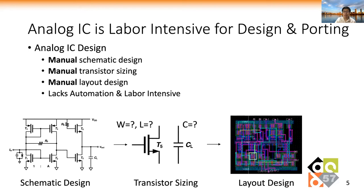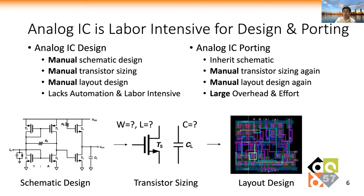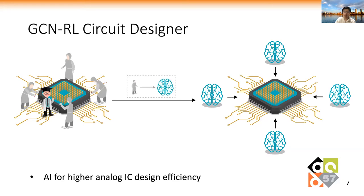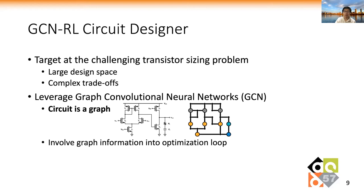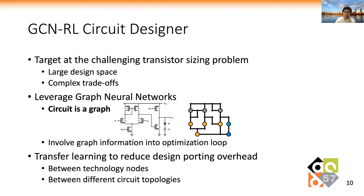In GCNRL circuit designer, we focus on the analog IC design problem because it is highly labor-intensive, requiring manual schematic design, transistor sizing, and layout design. To make things worse, porting of analog IC between technology nodes also requires huge manual efforts and large overhead. To this end, we propose GCNRL circuit designer, using AI techniques to make analog IC design more efficient. We target the challenging transistor sizing problem, which has a large design space and complex performance trade-offs. We leverage graph convolutional neural networks to evolve topology information into the design loop, inspired by the fact that circuit topology is a graph. Transfer learning between technology nodes and different topologies is also explored to reduce design porting overhead.